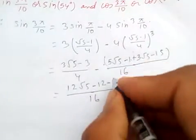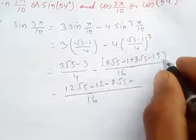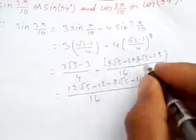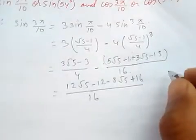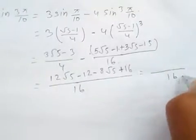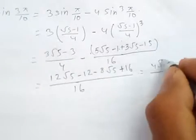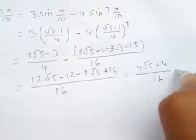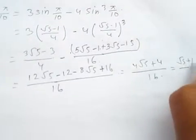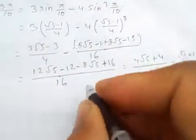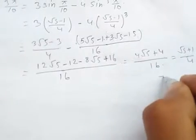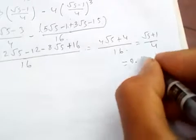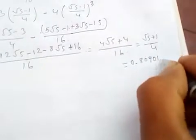And √5 is here, and now this becomes 16. This is 4√5 plus, so if you simplify this you get (√5+1)/4, and this value is approximately 0.80901 and so on.